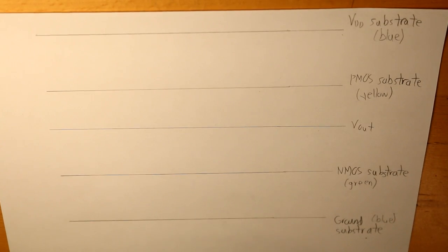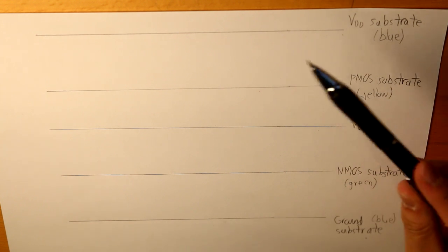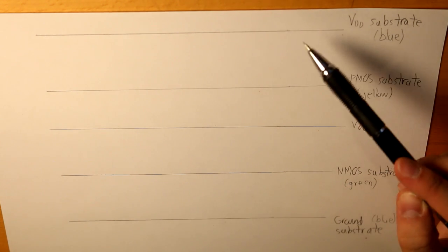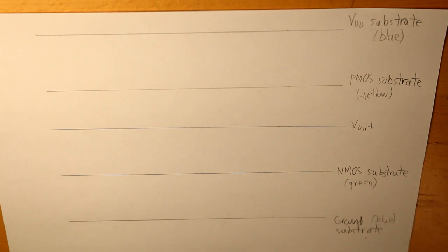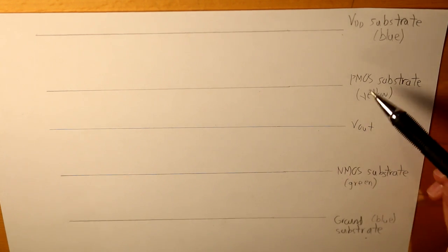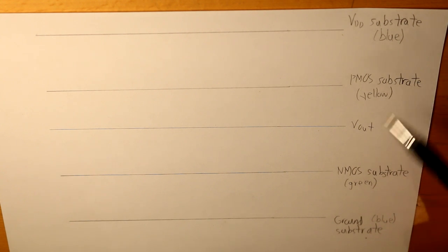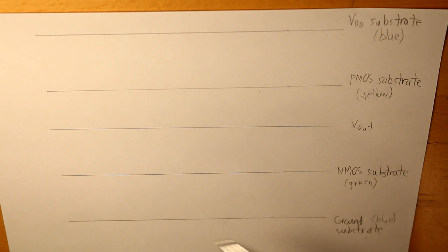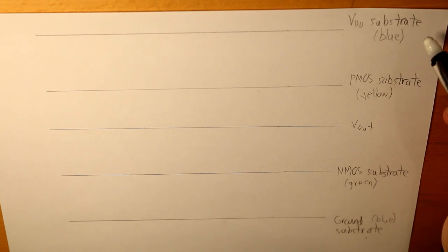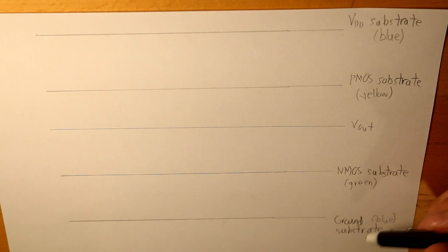A stick diagram looks like this — we have five lines. The first line would essentially be our VDD substrate, labeled in blue. The other would be the ground substrate, also labeled in blue. Then we have the PMOS substrate, which is the pull-up network; the NMOS substrate, which is the pull-down network; and then we have Vout, which isn't necessary but is kind of important. There's a given convention in IEEE where VDD and ground represent the specific colors explained.